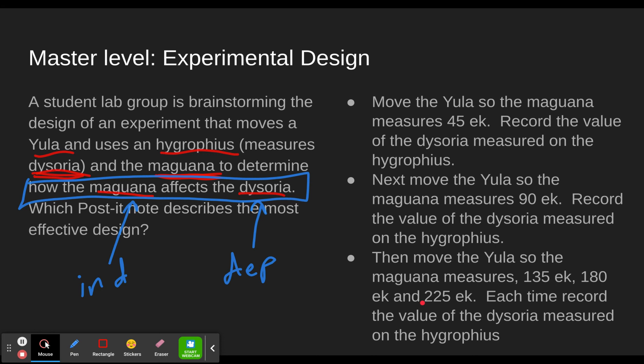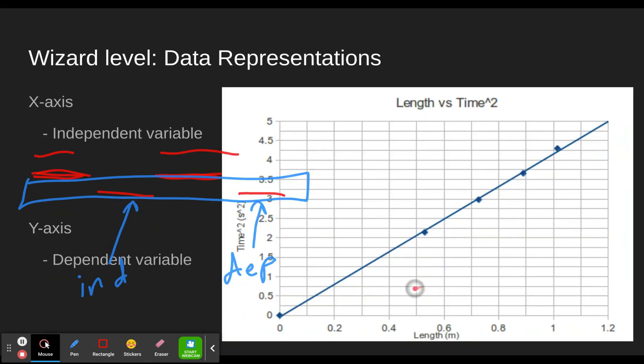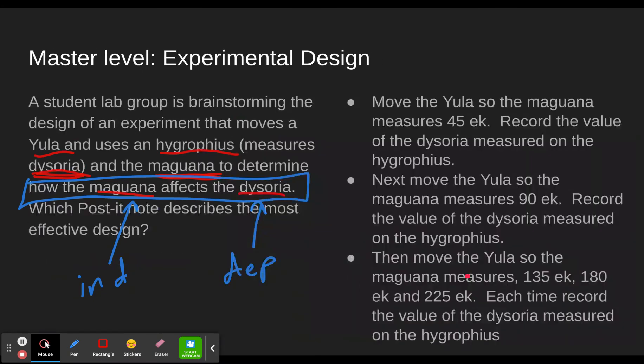In this, I wouldn't worry too much about it in this particular thing here. So each time record the value of the dysoria measured on the hygrophius. And so that means we're once again measuring the dependent variable while we change the independent variable.